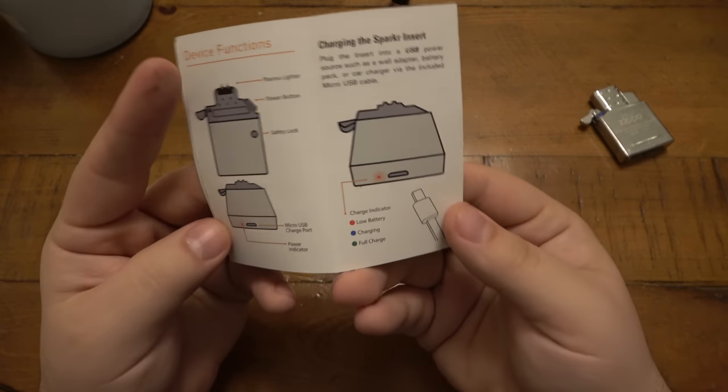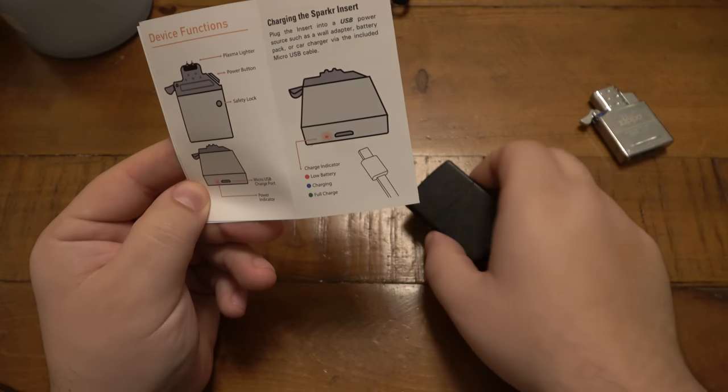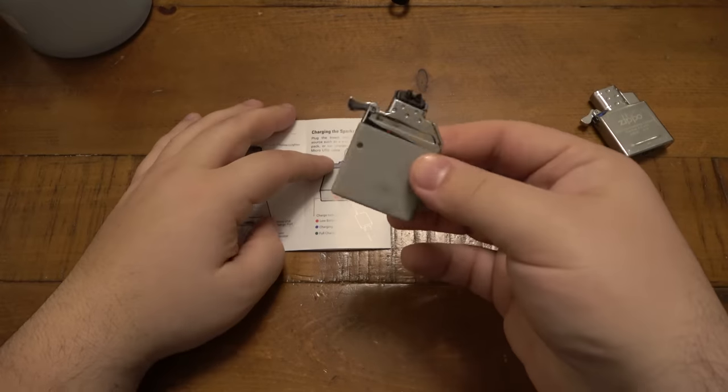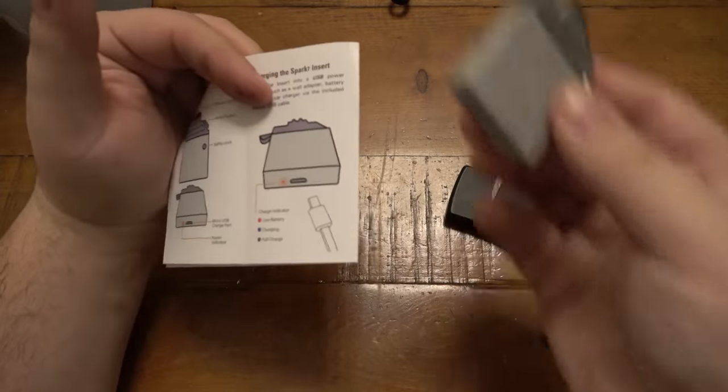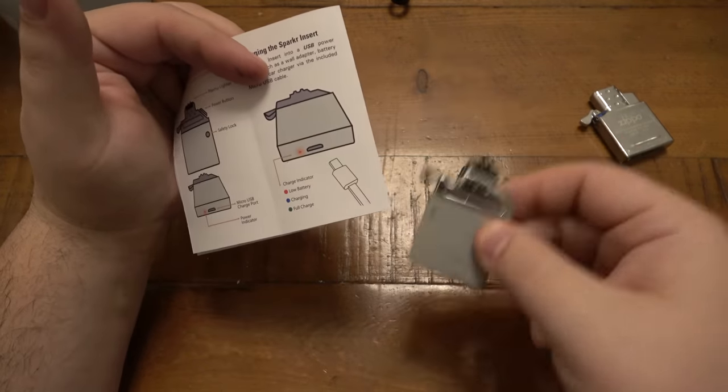All right. So here we go. Oh, it says safety lock. And battery indicator. All right. So when it's out, let's take this out. If you push that, it will give you a color. So red's low. So obviously it's brand new out of the package. So it's low. Blue is charging and green is fully charged. Very cool.